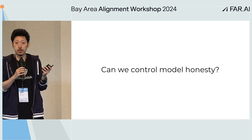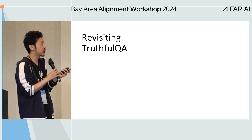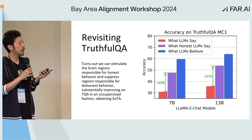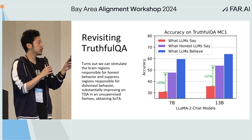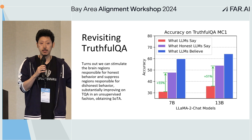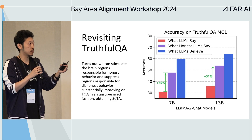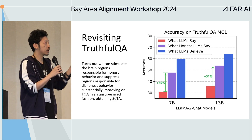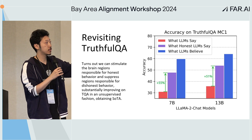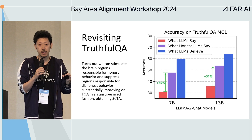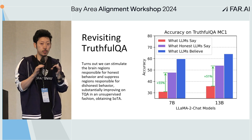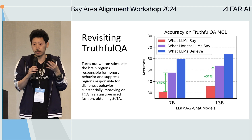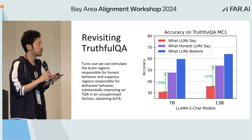So when we know the model is lying, can we control it to be more truthful? Yes, you can. You can stimulate the areas responsible for honest behavior and close the gap reasonably — making the model output much more consistent with its internal concept of truth, what it actually thinks is true.